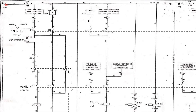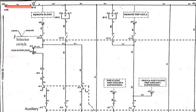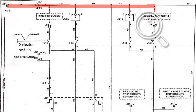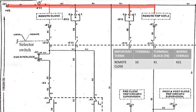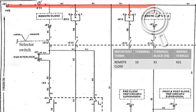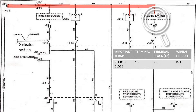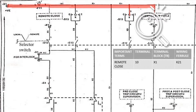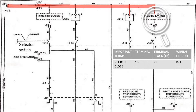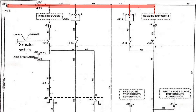Now the DC supply is given and the positive current flows like this. When the fuse is in healthy condition and in service position, the current will flow like this. From this we can say that remote trip is given at terminal number 10 having terminal block X1 with a wiring ferrule K21. We have already learnt in the previous videos how to read terminal number, terminal block and wiring ferrule. To refer, click on the description link below.